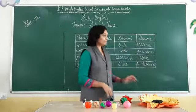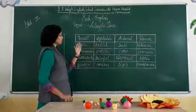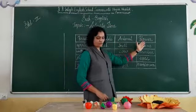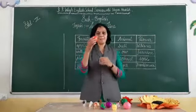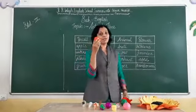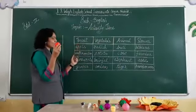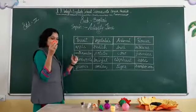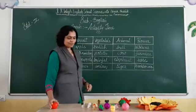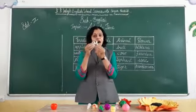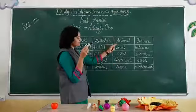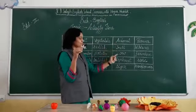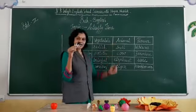There are four groups: fruit, vegetable, animal, and flower. First, apple — apple goes in the group of fruit. Then cow — cow is in the group of animal.